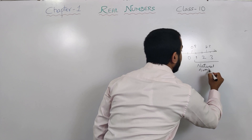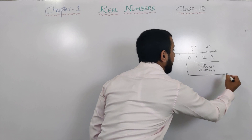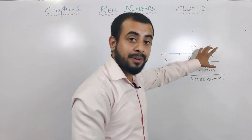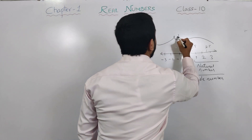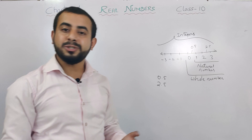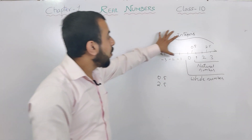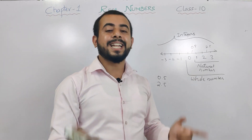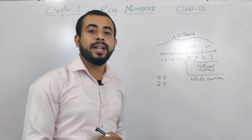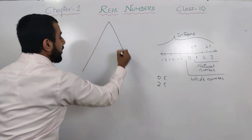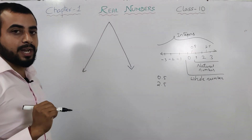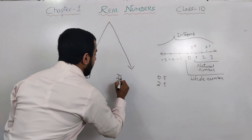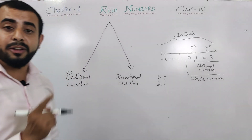Natural numbers start from 1 and go until infinity. Numbers including negative numbers, positive numbers, and zero are called integers. Prime numbers and composite numbers you have already studied in Class 9 and junior classes. All the numbers you have learned up to Class 9 come under real numbers. Real numbers have two parts: the first part is called rational numbers and the second part is called irrational numbers.